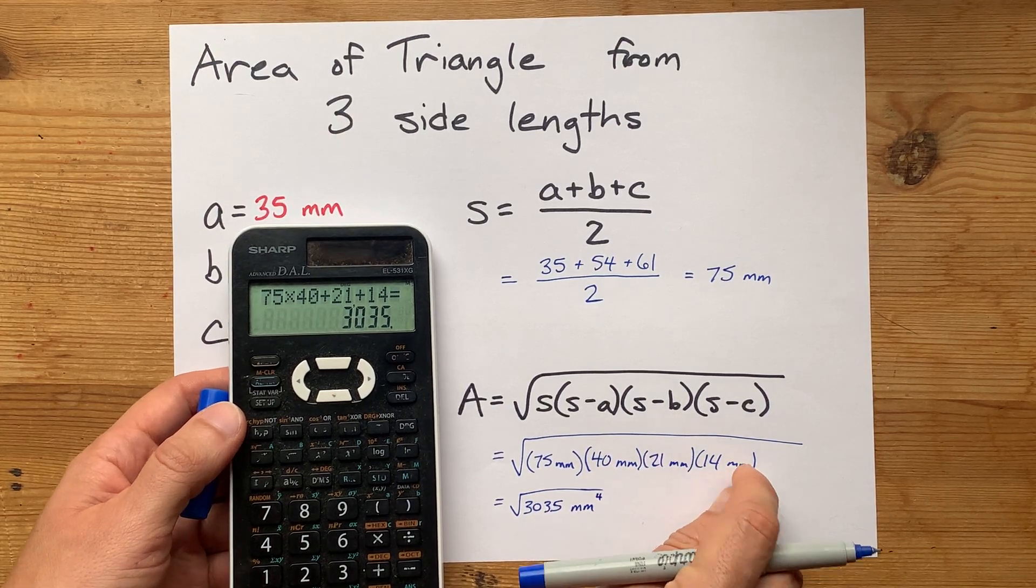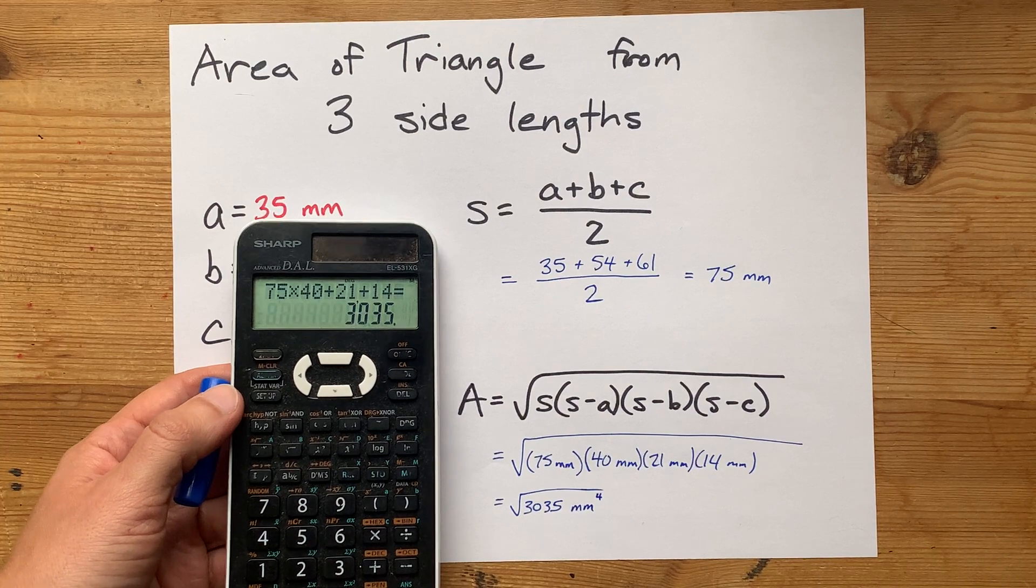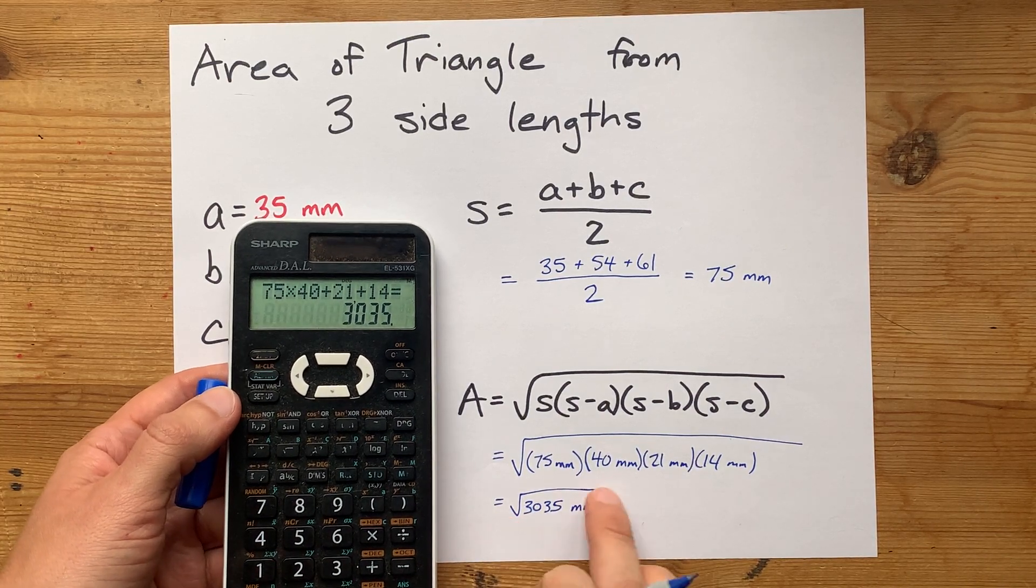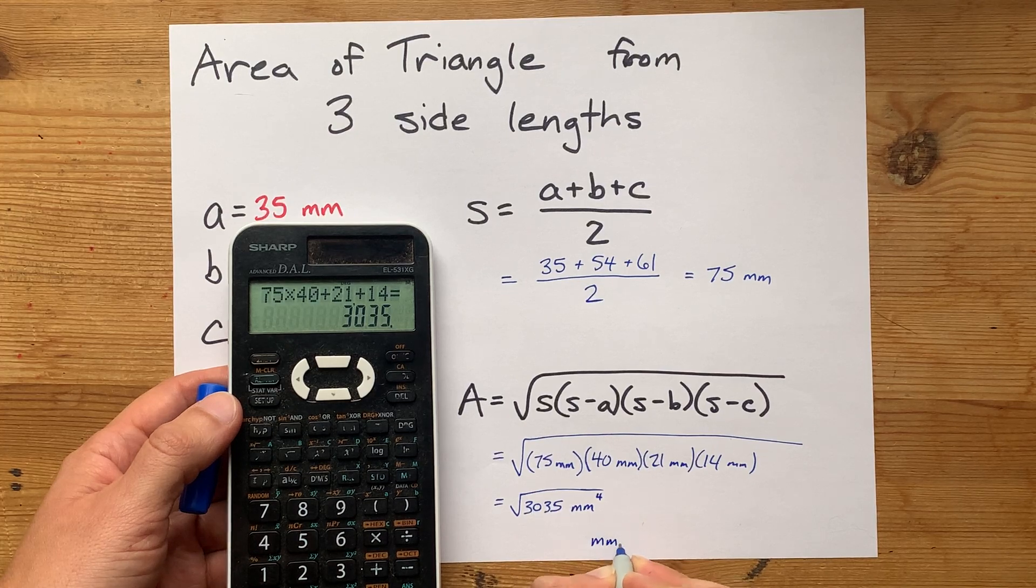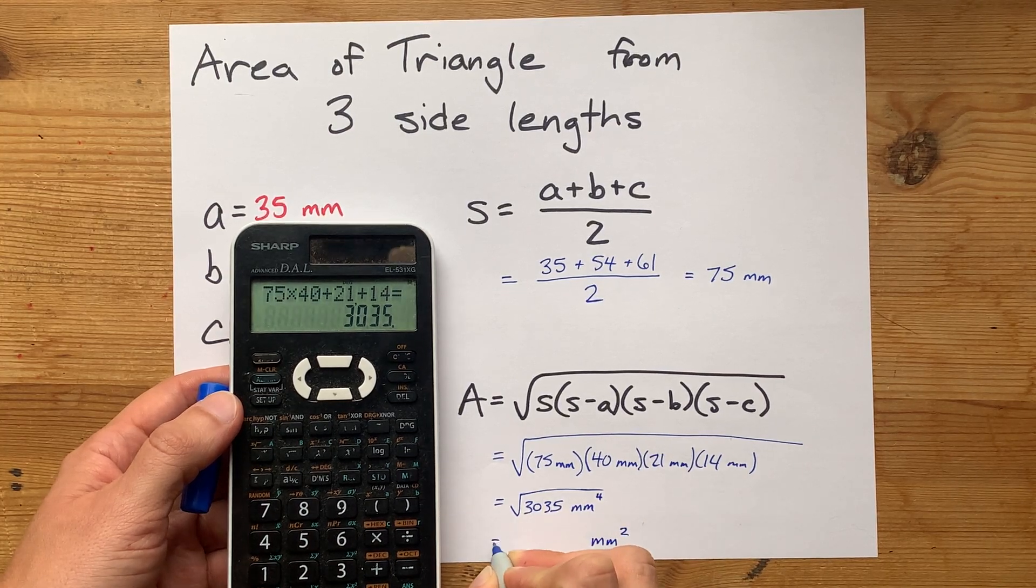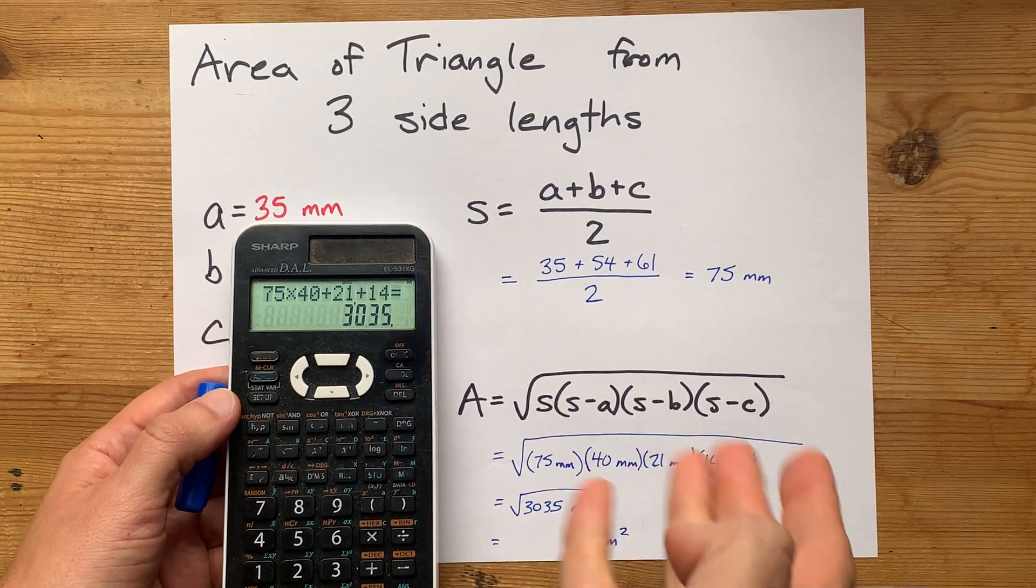1, 2, 3, 4 of those units all multiplied together does give you an exponent of 4. But then when you square root it, it's going to cut that unit down to millimeters squared, which is exactly what you expect for the units of an area to be. Some unit of distance, but squared.